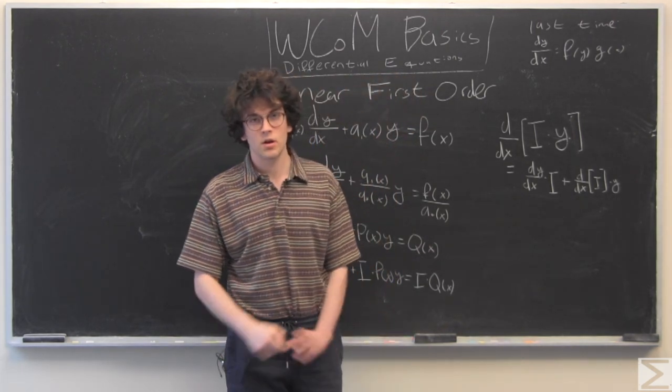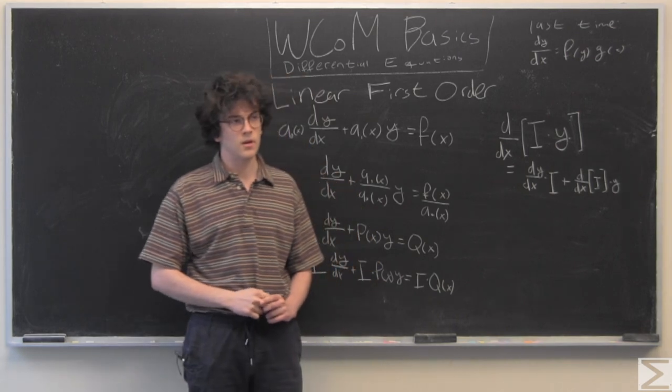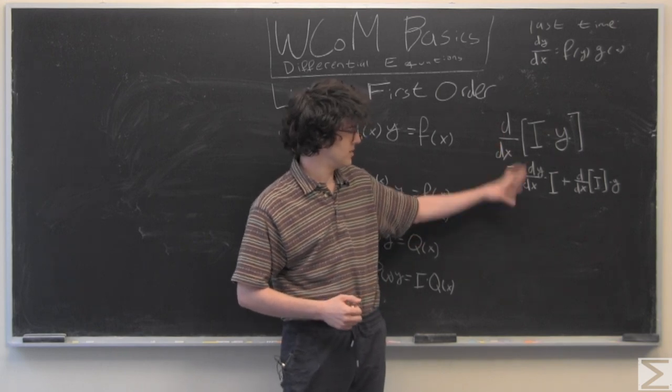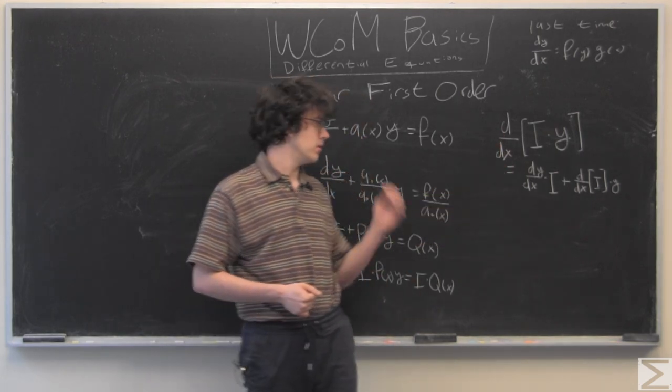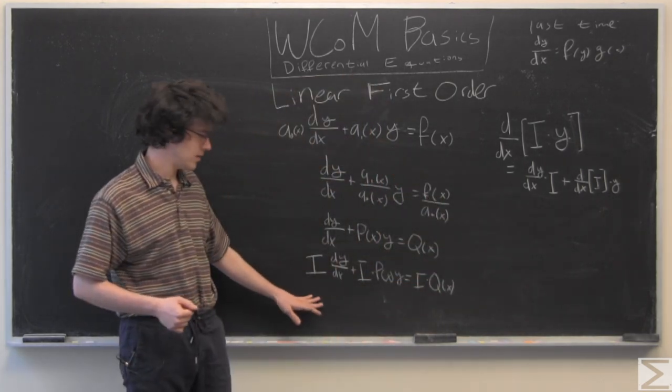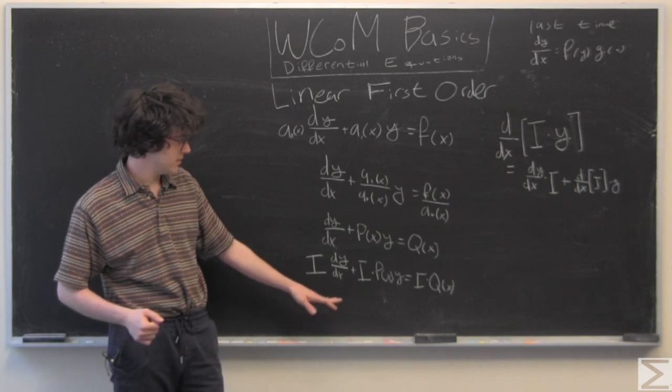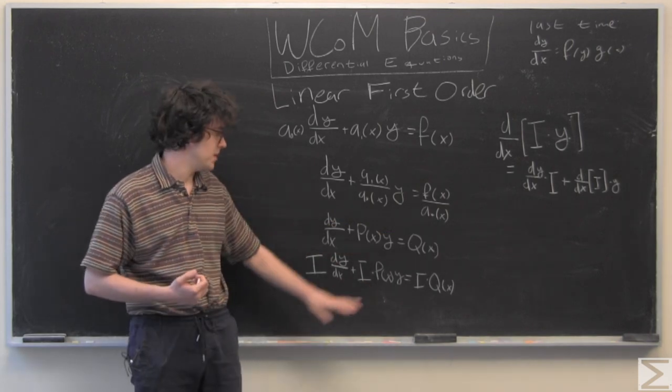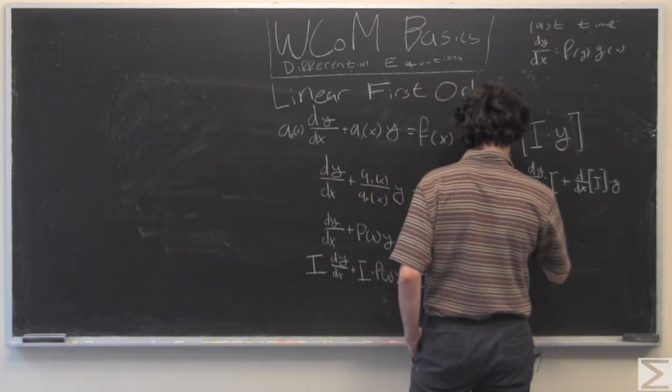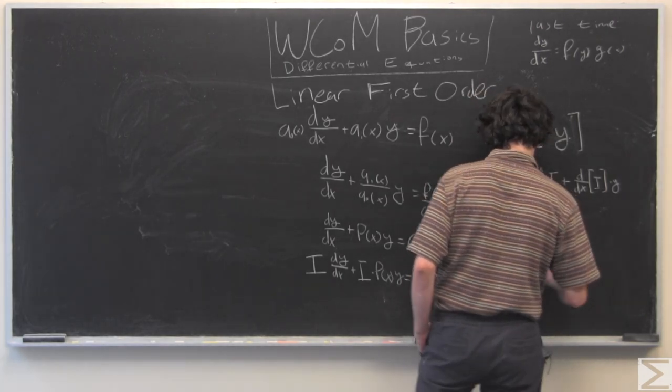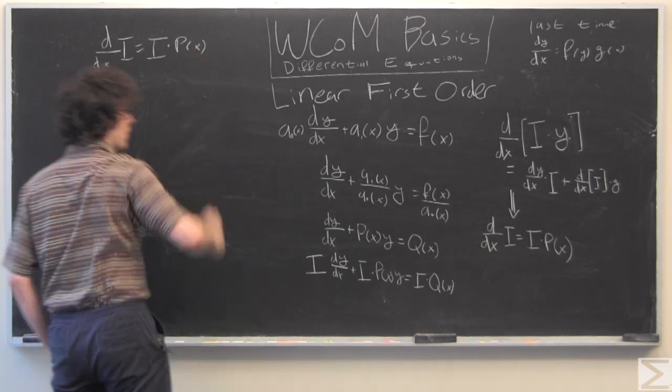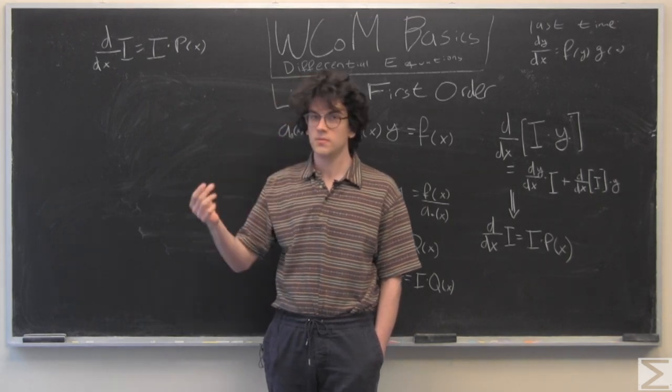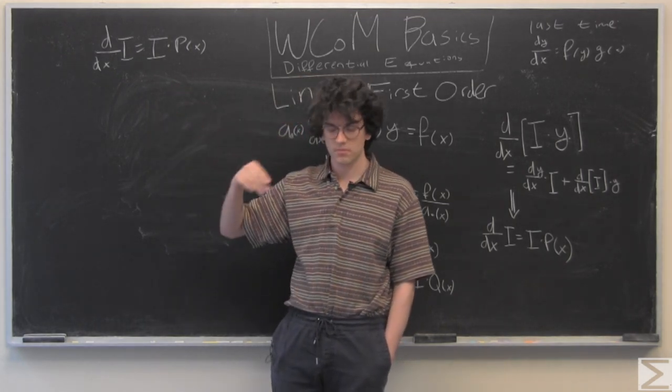So, moving in that direction of the product rule, knowing that that will probably help us get to where we need to be, we're going to take the derivative of i times y, and note that we get almost exactly what we have here on this left-hand side. The only difference is we need the derivative of i to be equal to i times p of x.